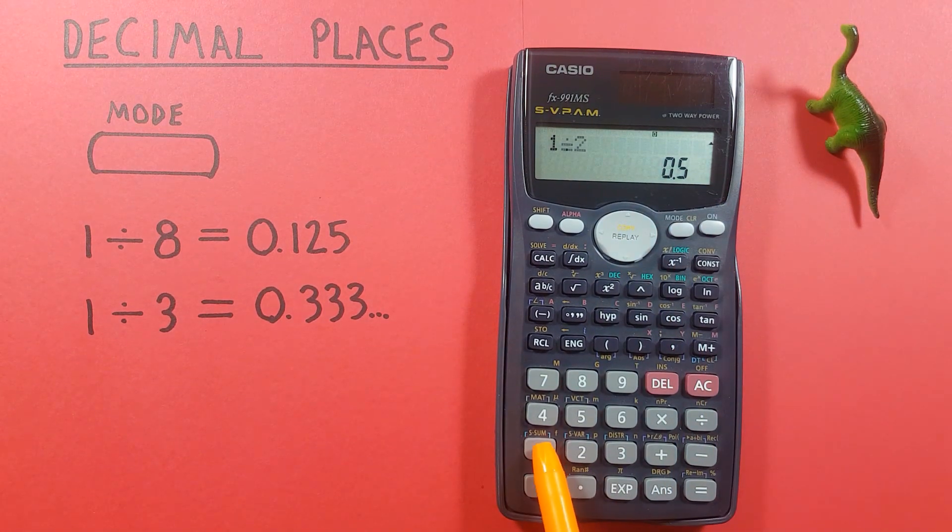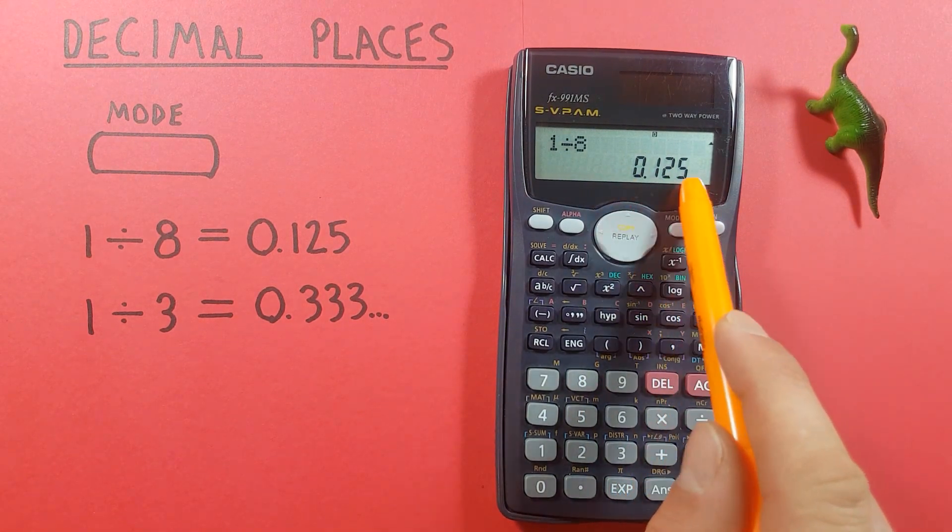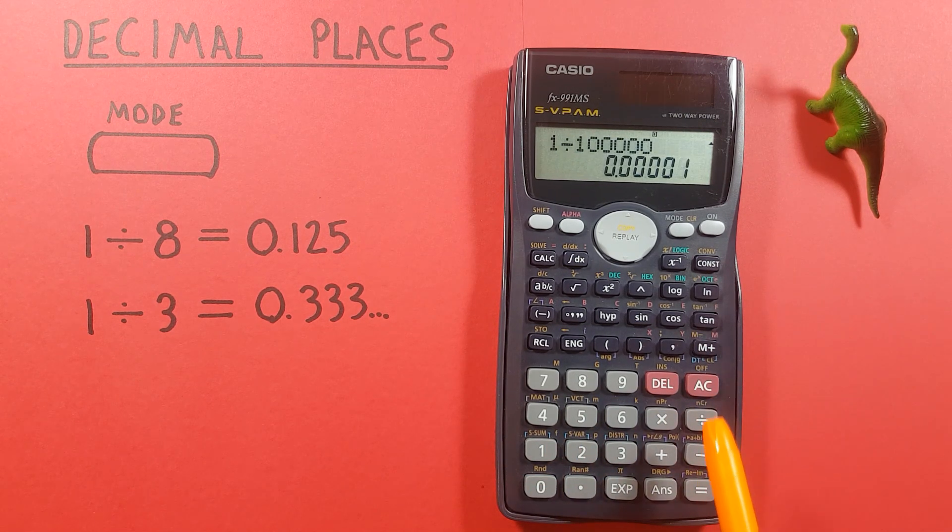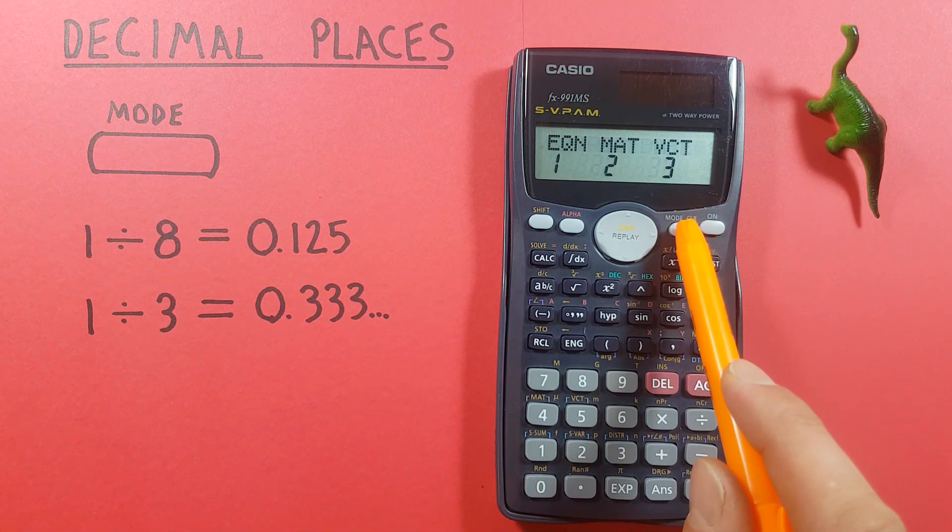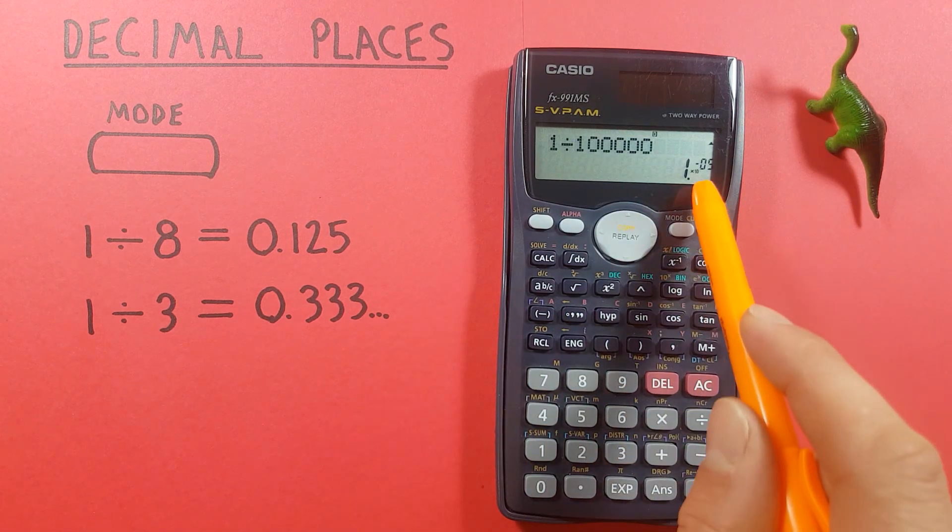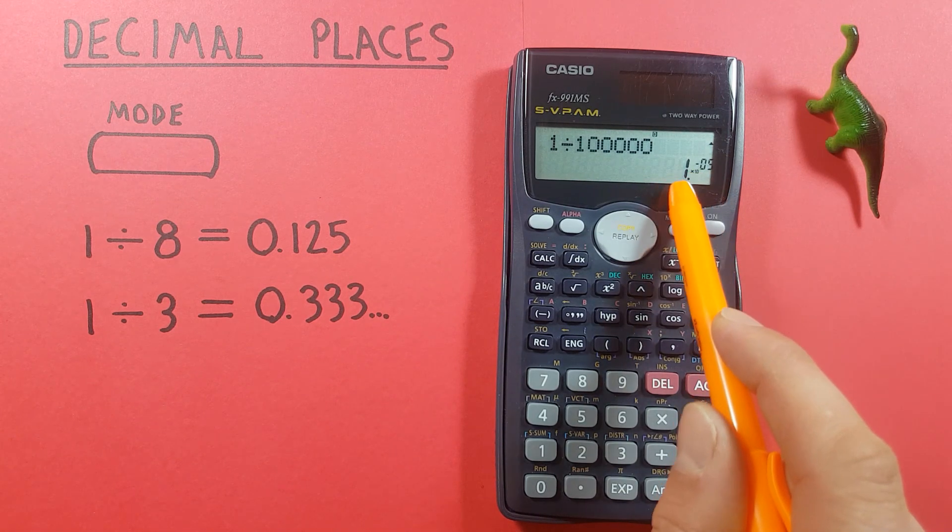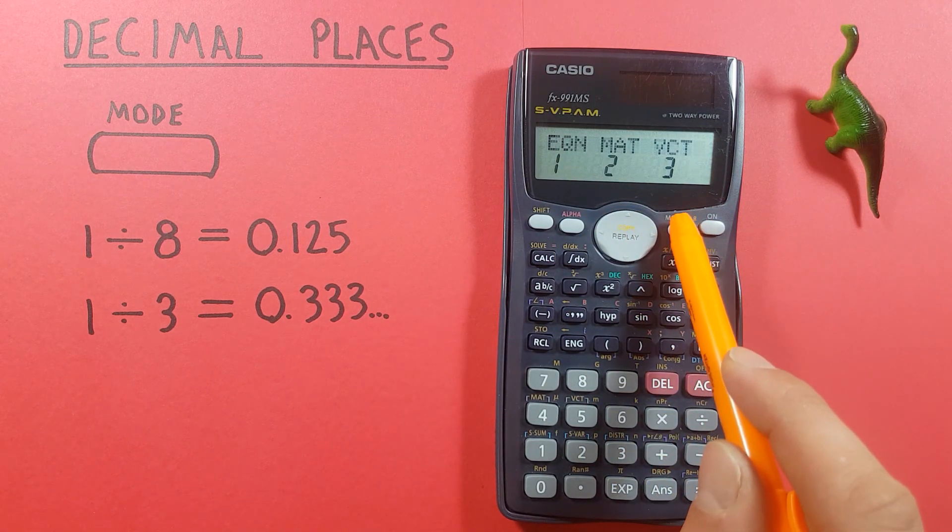So now if we do 1 divided by 8 we get all the decimal places needed to display our answer. I recommend normal mode 2 because if you're doing very small numbers like say 1 divided by 100,000 it gives you the decimal answer. While if you're in normal mode 1 you see it adjusts it to a scientific notation result there. This is up to you. Personally I like to see the decimals so I'll turn it back to normal mode 2.